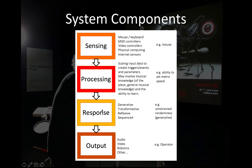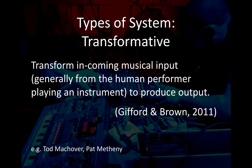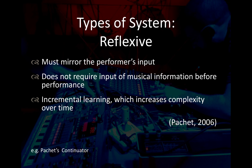The response type can classify the system. Generative systems utilize algorithmic composition techniques to generate output — for example, Brett Patty's Node Weaver, where you input data and it produces patterns with a random or chance element. Transformative systems transform incoming musical inputs from the human performer to produce output. Reflexive systems mirror the performer's inputs and are great for improvisation; they may also use artificial intelligence to learn about performance style, increasing the complexity of their response.